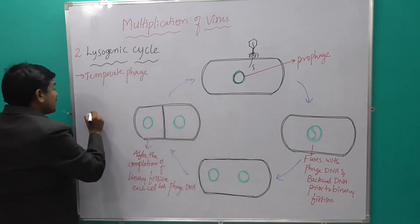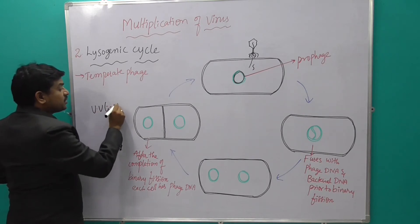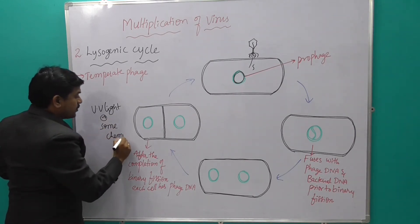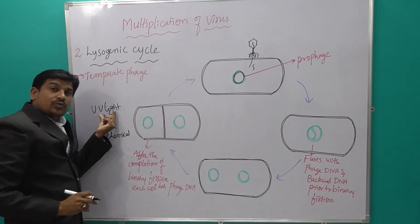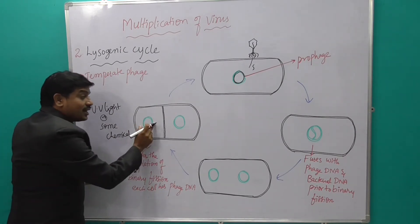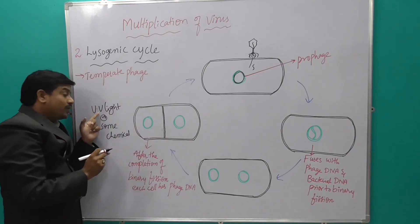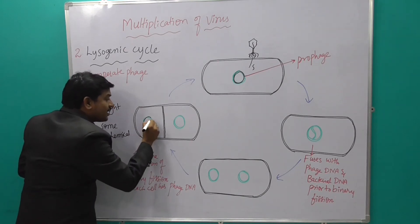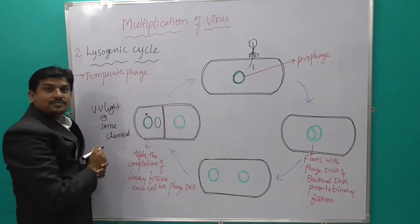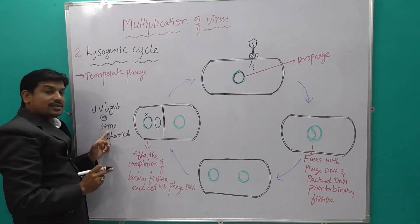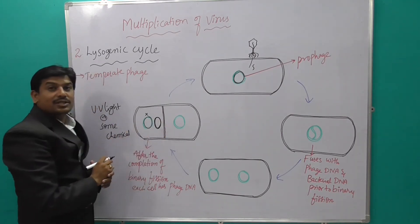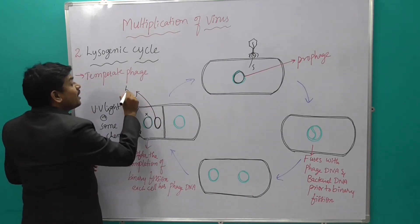An important concept: when the cell is exposed to UV light or certain chemicals, the phage DNA and bacterial DNA, which were fused, are separated. The bacterial DNA degenerates, and only the phage DNA remains. This phage DNA then enters and initiates the lytic cycle — this is a very important point.